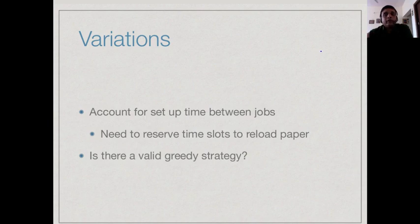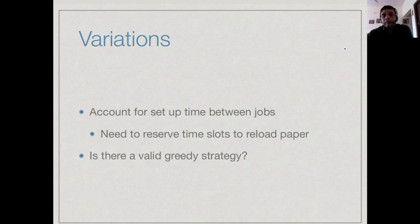Another thing to keep in mind is that a machine cannot run indefinitely without being stopped — for maintenance, loading paper, or something else. So you can't realistically assume every machine is continuously available. Under all these situations, is there still a valid greedy strategy, or do we have to do something else? The general idea is that there is a basic problem with some constraints that you want to solve, but it can be made more realistic by adding new features. Each time you add a new feature, you have to see whether the solution for the simpler problem still works, or whether the new feature demands a radically new approach.